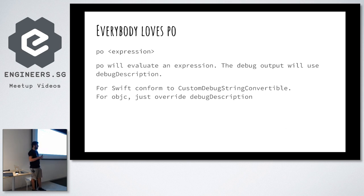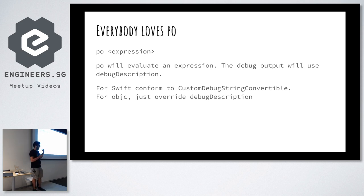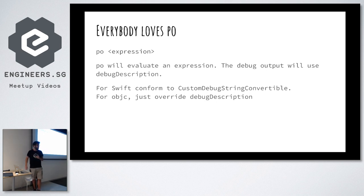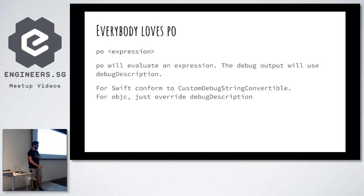If you are using Swift, you can conform to the `CustomDebugStringConvertible` protocol, and you need to implement a method. You can also get a default implementation for free, or override and provide your own. This works quite well for most cases, except when you need to modify the source code.